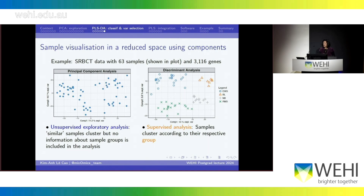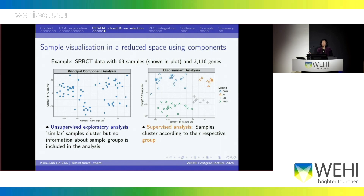You can compare a PCA plot on the left and a discriminant analysis plot on the right. PCA is unsupervised, so all dots are blue — emphasizing that we don't know anything about the groups. This is a dataset with 63 samples and about 3000 genes. In discriminant analysis using PLS-DA, I explicitly asked the method to discriminate four groups of patients with different tumor subtypes, and you can already see discrimination happening. Whereas in PCA you might see clusters but don't know what they correspond to, though you can identify outliers and batch effects.